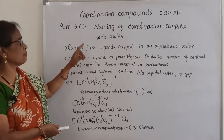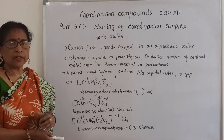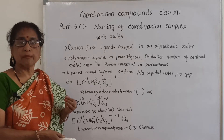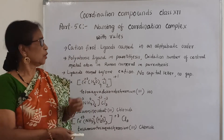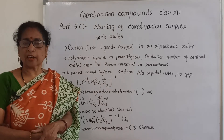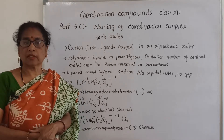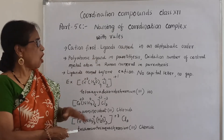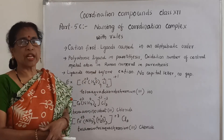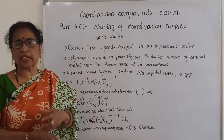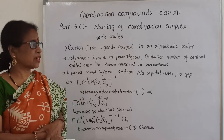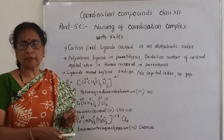Rule 1: Cation is named first. Rule 2: Ligands are named in alphabetical order — whether unidentate, bidentate, polydentate, monoatomic, or polyatomic. Rule 3: Polyatomic ligands are written in parentheses — for example, ammonia and water. Rule 4: The oxidation number of the central metal atom is calculated and written in Roman numerals in parentheses.